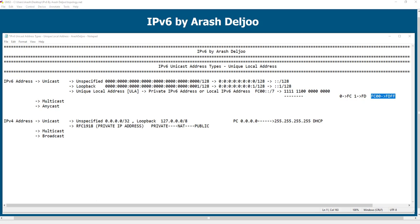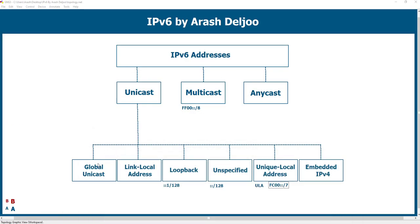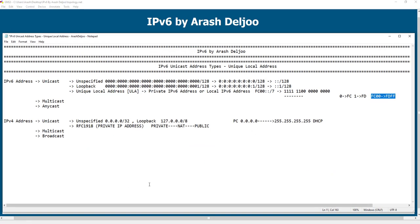Now let's review the features of Unique Local Addresses. The first thing is that they can be used just like Global Unicast Addresses — which are the public IPv6 addresses, the counterpart of public IPv4 addresses — but only inside the network. Global Unicast Addresses can be used on the internet. So: private IPv4 = Unique Local Address, and public IPv4 = Global Unicast Address.